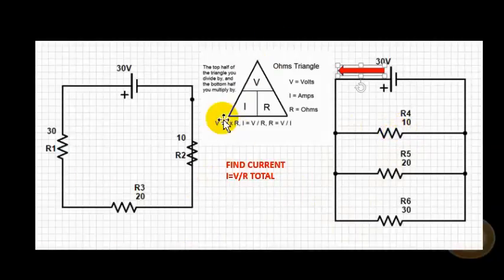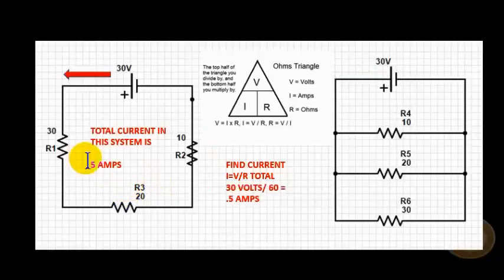Back to our pyramid, we're going to find current first. Current equals voltage divided by resistance or total resistance. We're going to work with the series circuit first.